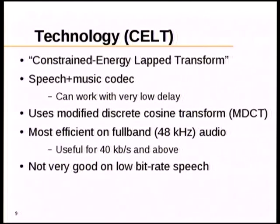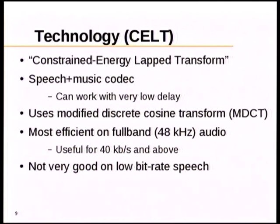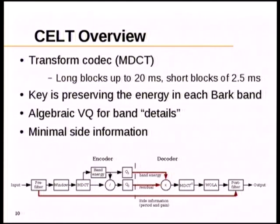CELT stands for Constrained Energy Lapped Transform. It's designed to handle both speech and music and can scale to very low delay. Like most general-purpose audio codecs, it's based on the Modified Discrete Cosine Transform (MDCT), just like Vorbis and in some ways MP3 and AAC. It's most efficient on fullband signals, with a useful range of around 40 kbps and above. In their original forms, there was pretty much no overlap between CELT and SILK, and CELT is not very good for low-bitrate speech.